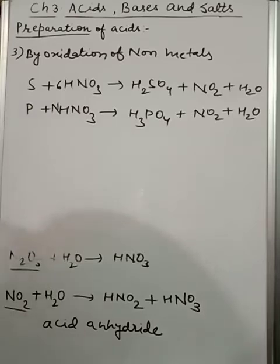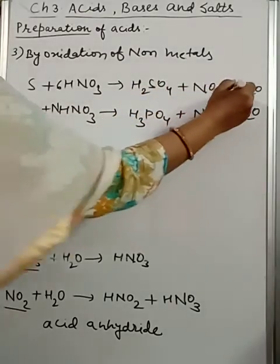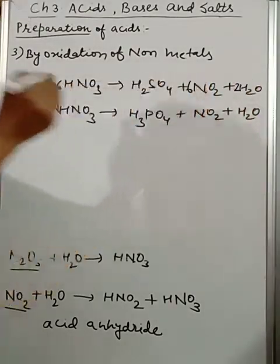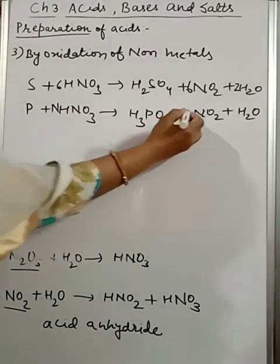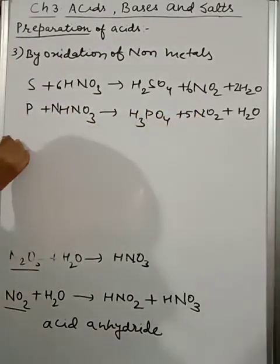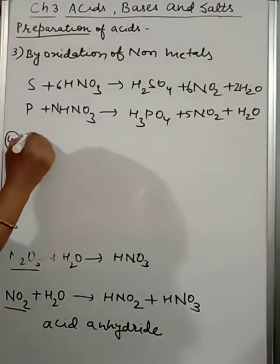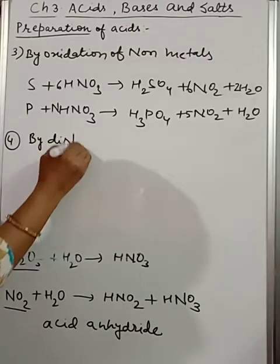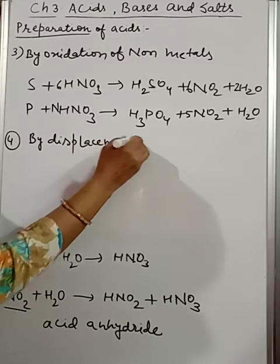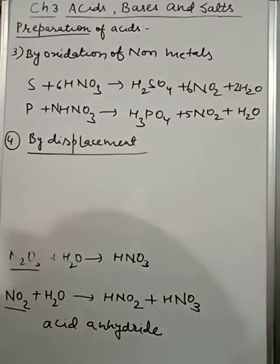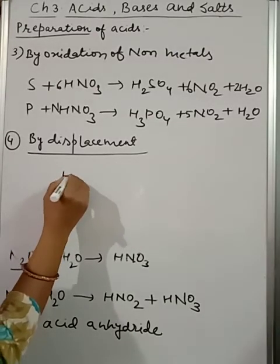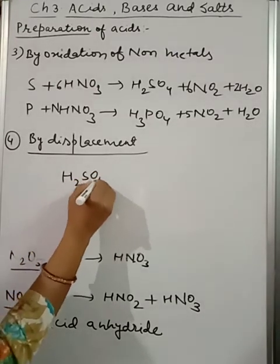Now we are going to discuss the next point: conversion of one acid to another by displacement. Children, here you will see we are going to take one acid and in return we will get another by displacement. Like, see here, if we are going to take H2SO4, which is considered as a very strong acid as well as non-volatile in nature.